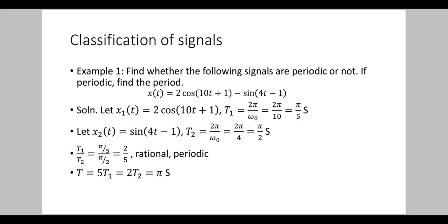Let us follow the following method. Take x1(t) = 2cos(10t + 1). The time period of this sinusoidal signal is 2π by ω₀. Here ω₀ = 10, so T1 = 2π/10 = π/5 seconds. That is, π/5 second is the time period of signal x1(t) = 2cos(10t + 1).